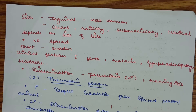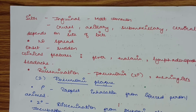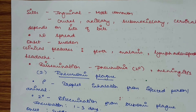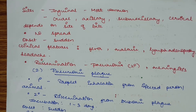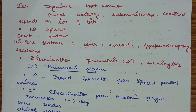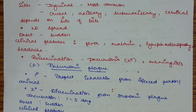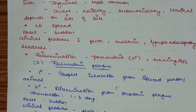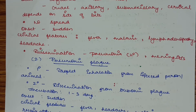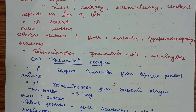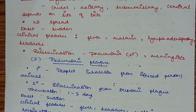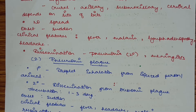There is generally no spread. The onset is sudden and the clinical features of bubonic plague include fever, malaise, lymphadenopathy, and headache. It can either heal by treatment or lead to dissemination, causing pneumonia or meningitis.